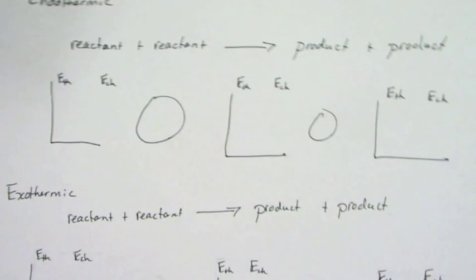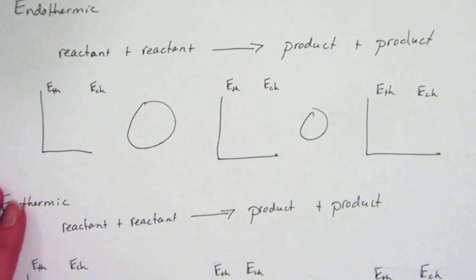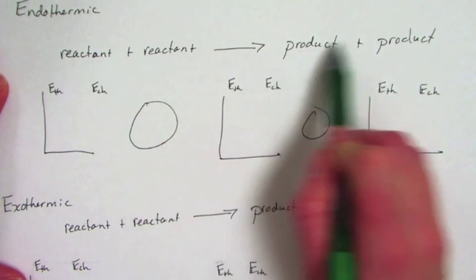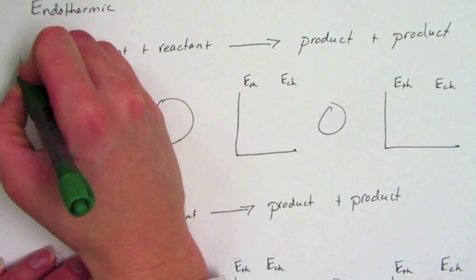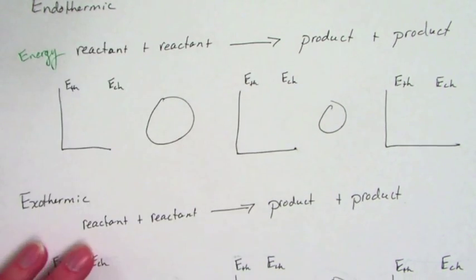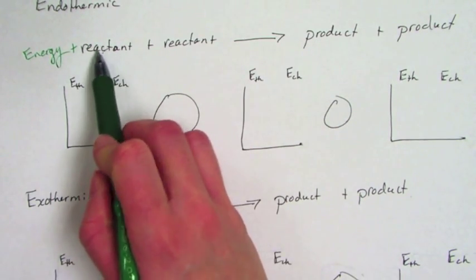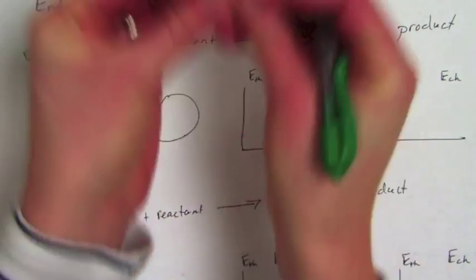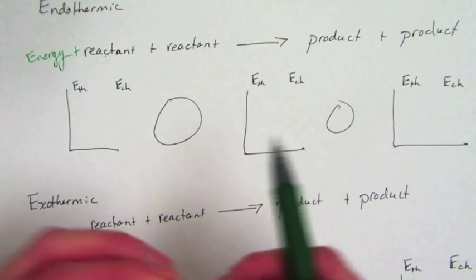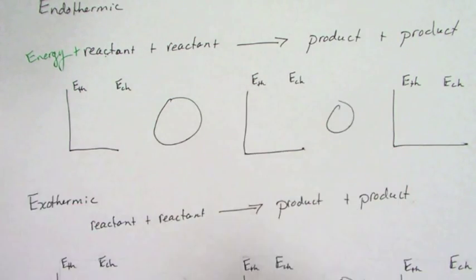Let's move to the bar graphs and look at what an endothermic and exothermic reaction looks like. For an endothermic reaction, we have our reactants and our products. If this is endothermic, it means we have to put energy in for this reaction to go — energy is a reactant. We add energy, which causes particles to move fast enough that when they collide, they stick instead of bouncing off. They stick and that energy goes from their movement into forming the bond.